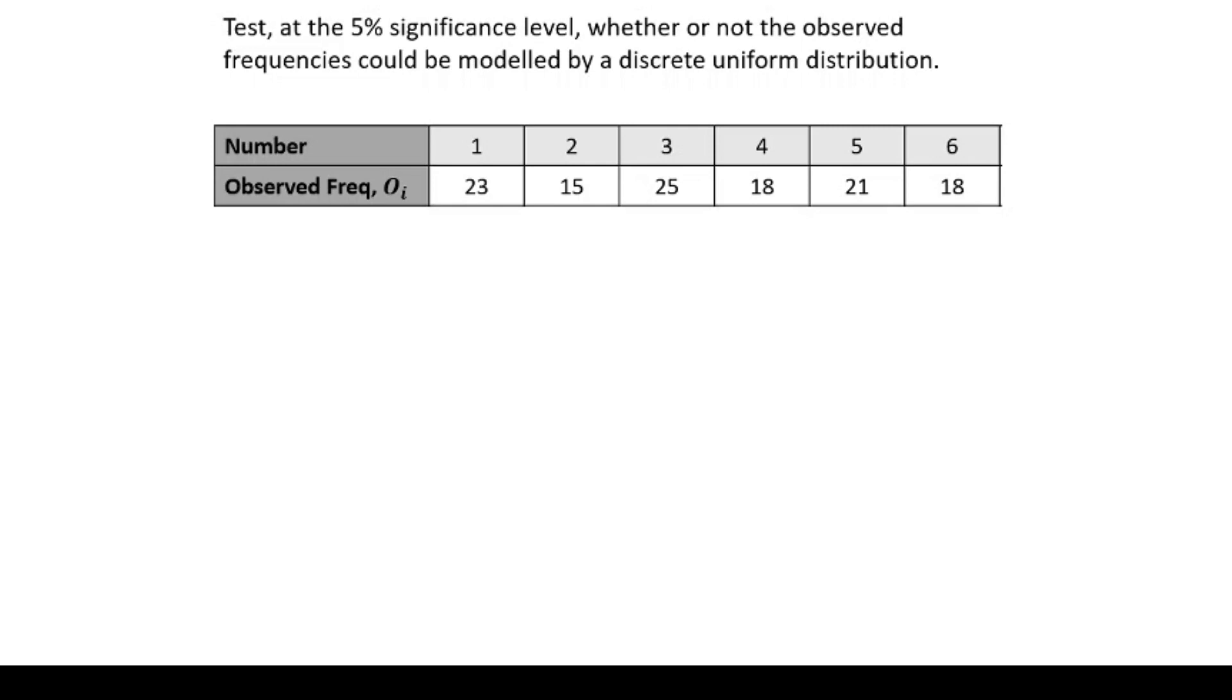As we move on, we're going to try and combine what you've seen so far about chi-squared distributions into a formal hypothesis test. There'll be some aspects you'd recognize and maybe a few new aspects to pay attention to. Here we've been told to test at the 5% significance level whether or not the observed frequencies can be modeled by a discrete uniform distribution.